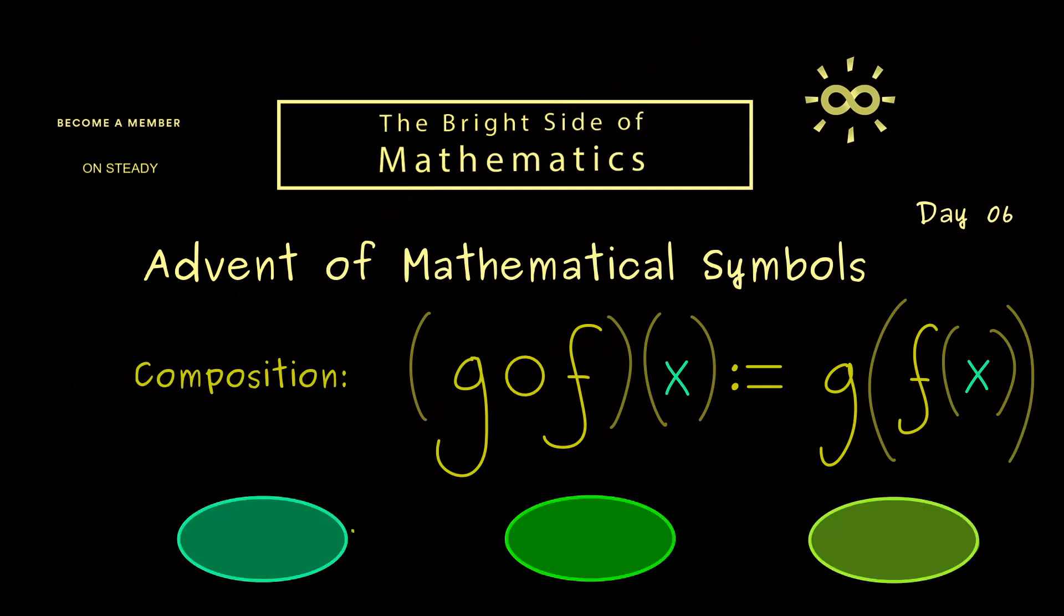First we have f that maps from left to the middle. And then we have g that maps from the middle set to the right set. Therefore, the new map g composed with f goes immediately from left to right.